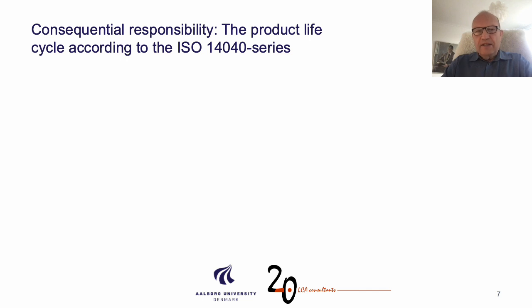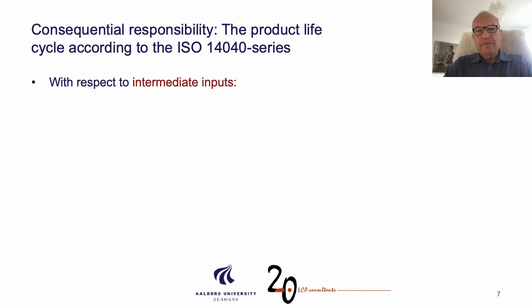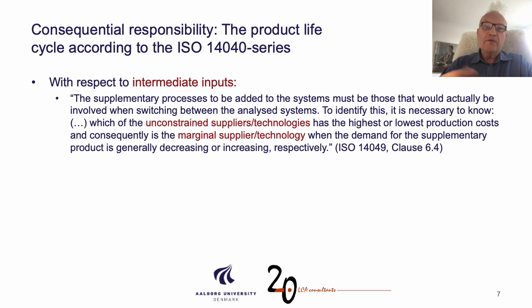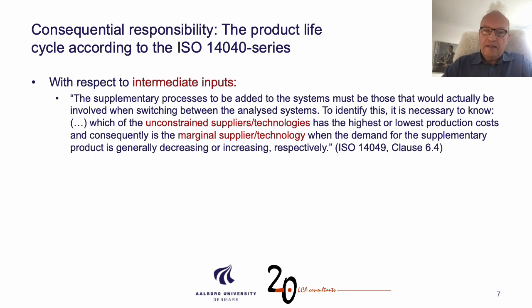The standard is also quite clear on the actual procedures to use, for example when linking to intermediate inputs. It says that the supplementary processes to be added to the systems must be those that would actually be involved when switching between the analyzed systems. And to identify this, it's necessary to know which of the unconstrained suppliers or technologies has the highest and lowest production costs and, consequentially, is the marginal supplier or technology when the demand for the supplementary product is generally decreasing or increasing, respectively. Considering that this was written back in 1998, it's actually a surprisingly complete and precise description of what we do when we link unit processes in consequential modeling.